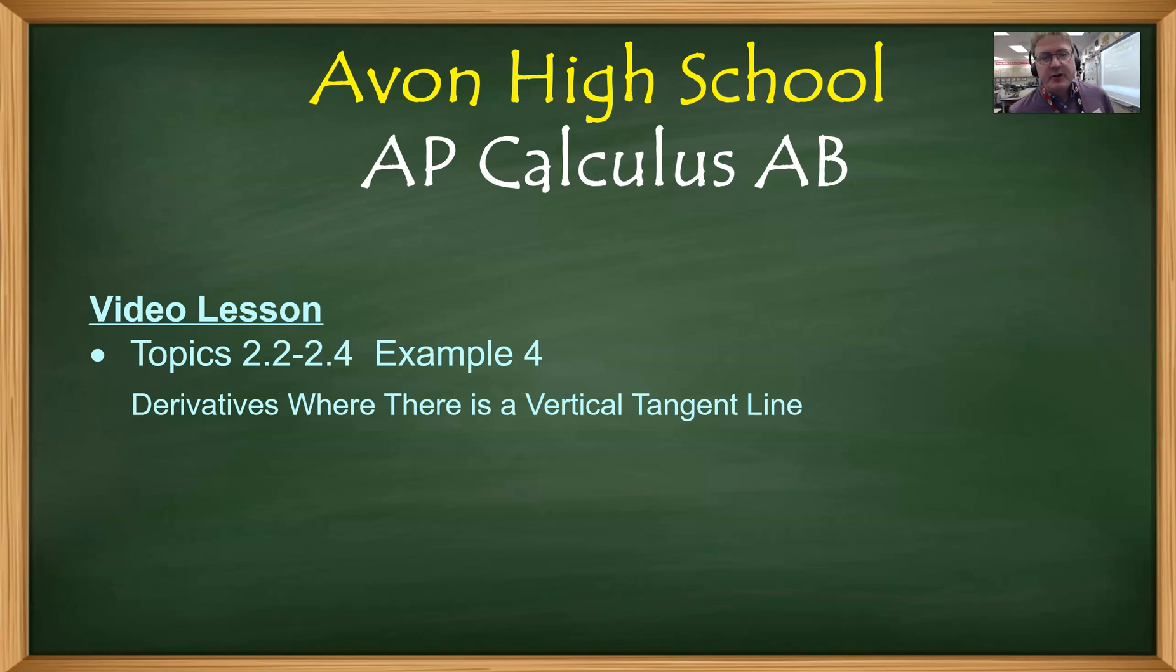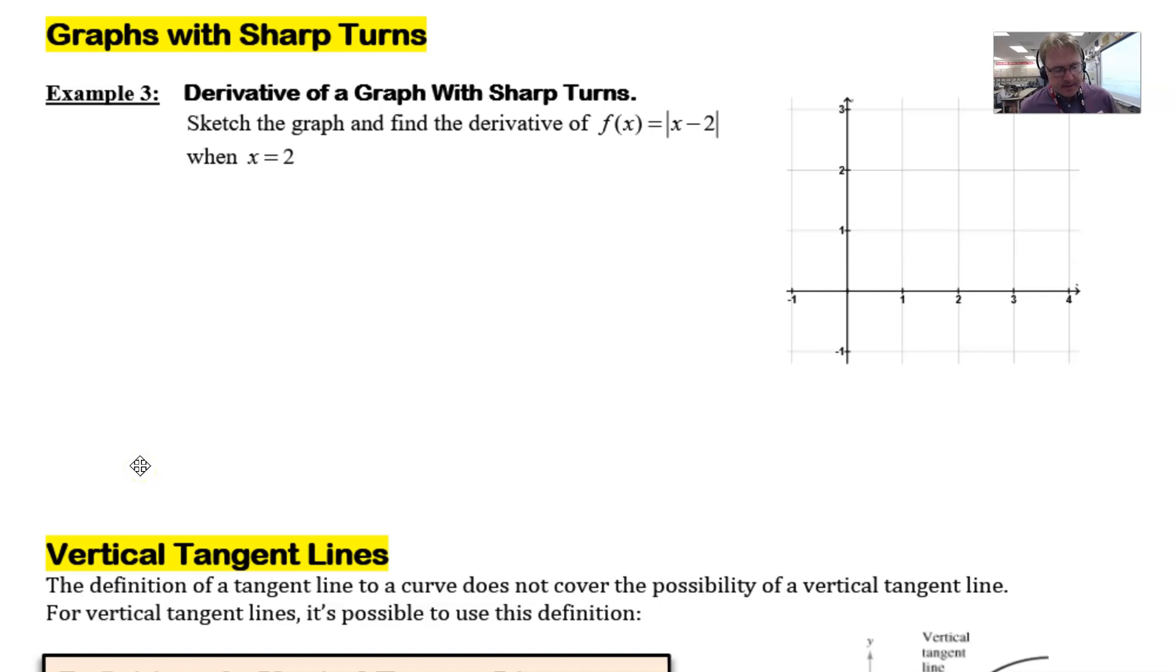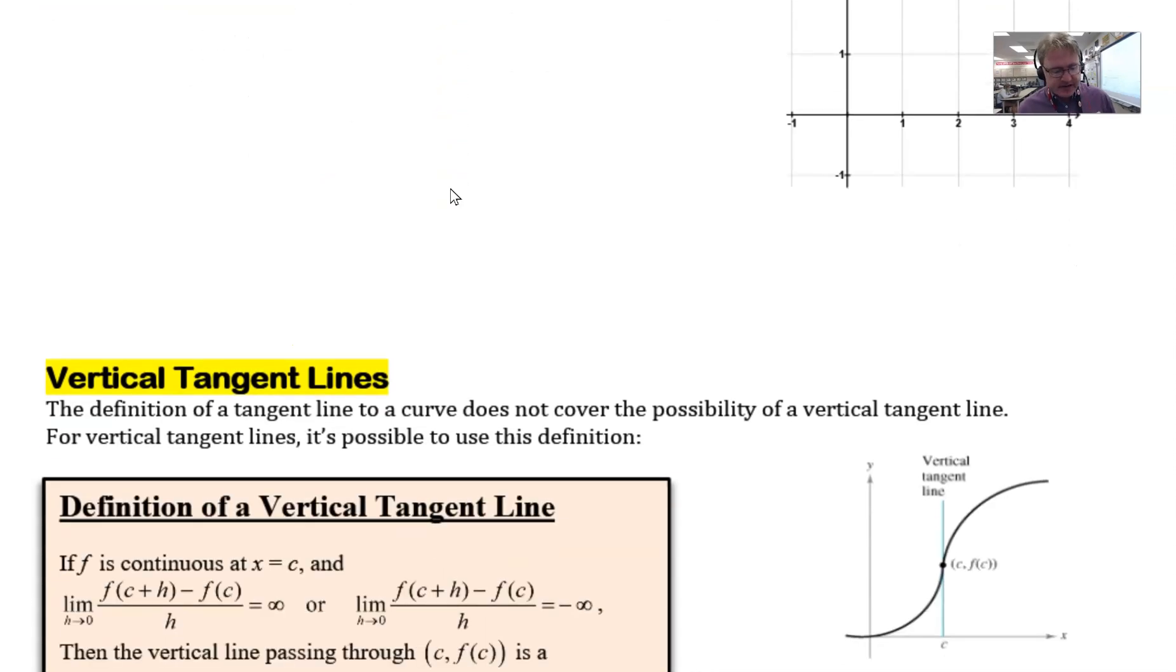Hello AP Calculus AB students, Mr. Record here from Avon High School. We're going to take a look at Example 4 from our conglomeration of topics from 2.2 to 2.4, focusing on vertical tangent lines in this video. If you remember from the last video, we talked about graphs with sharp turns—that's one instance where a derivative may not exist, but it's not the only instance.